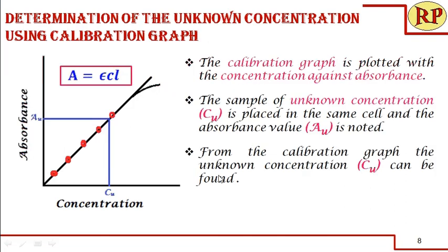We then draw the calibration graph — absorbance on the y-axis versus concentration on the x-axis. The calibration graph passes through the origin because when concentration is 0, absorbance was set to 0. As concentration increases, absorbance increases. At higher concentrations it becomes non-linear, so colorimetric analysis is more suitable for lower concentrations.